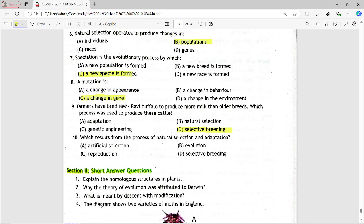Next MCQ is which results from the process of natural selection and adaptation. Options are: artificial selection, evolution, reproduction, selective breeding. Answer is option B, evolution.